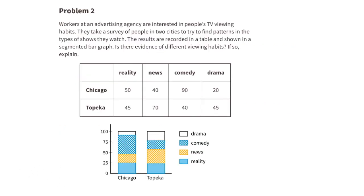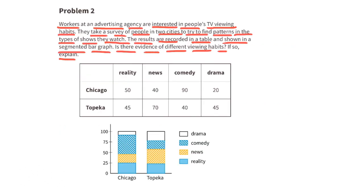Problem number 2. Workers at an advertising agency are interested in people's TV viewing habits. They take a survey of people in two cities to try to find patterns in the types of shows they watch. The results are recorded in a table and shown in a segmented bar graph.